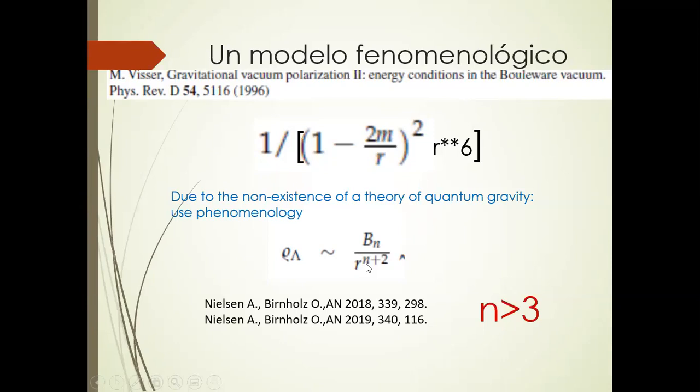N is equal to 2 is excluded by solar system experiments. It cannot be. We worked with N equals 3 for most of the time until these guys, Nielsen and Bjornholm, showed analyzing the LIGO event and using pseudo-complex general relativity that in order to describe the infalling phase of the merger of two black holes, N has to be 3. So we now take N equal to 4, but without security that this is the last step. And when you take N equal to 4, it has a 1 over R to 6 fall off. So let's see what is happening.